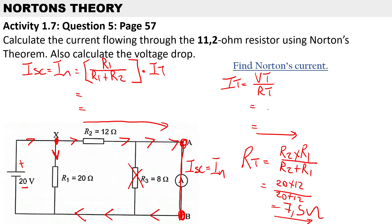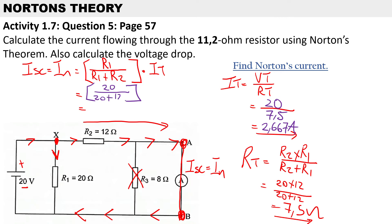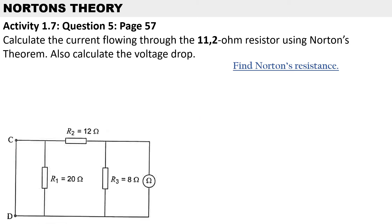To calculate the current, it's V total over R total. The total voltage is 20V and the resistance total is 7.5 ohms, so the total current is 2.667 amps. Substituting into the current divider rule — R1 is 20, R2 is 12, total current is 2.667 — that gives us a Norton's current of approximately 1.667 amps.